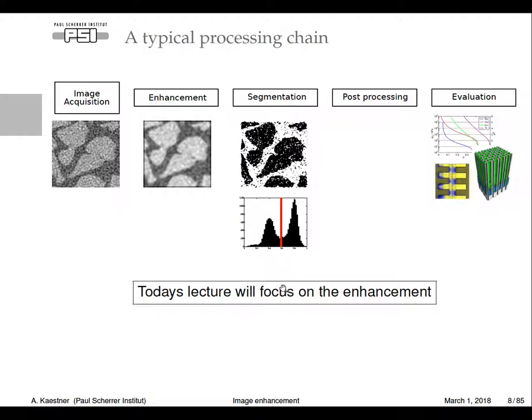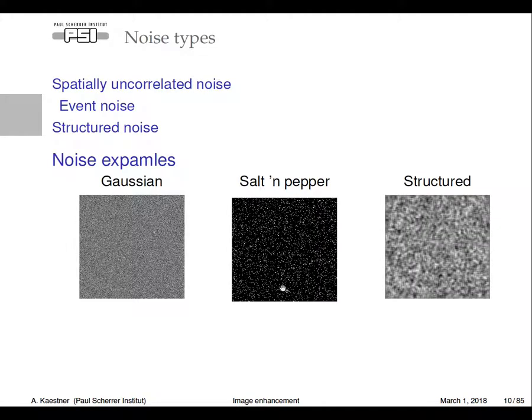The whole processing chain is that you have acquired your image. Do some enhancement in today's lecture. Segmentation will come later. And also post-processing and evaluation, which is the final product you want to have. It could be, for example, water retention curves. It could be material distributions. Or other water distribution that's a fuel cell. And that is the information you will get in the end. So, going to noise.